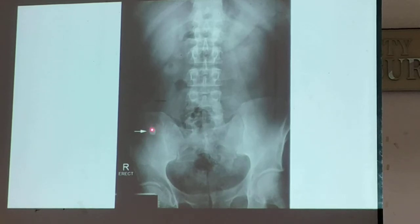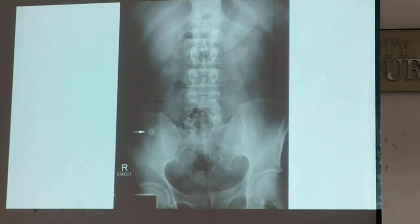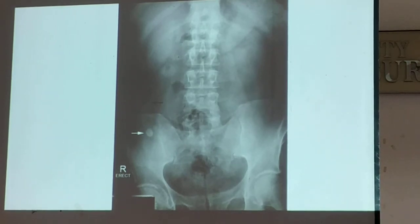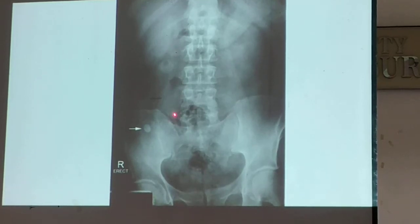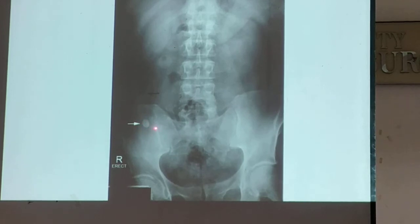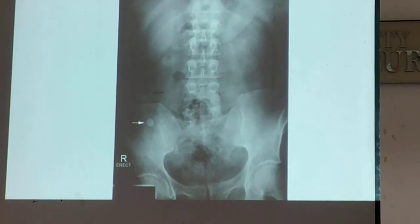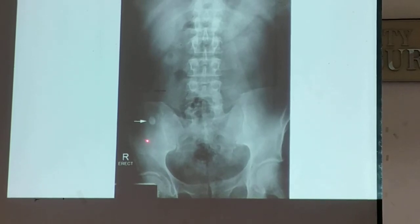The lesion is this one. Normally you do not see this — try to compare the right side and the left side. If you see this solitary calcification, this would be considered an appendicolith — a stone in the appendix. Your ureter is seen at the lateral side of your spine, so you should not consider this a ureteral stone. This is in the right lower quadrant area.